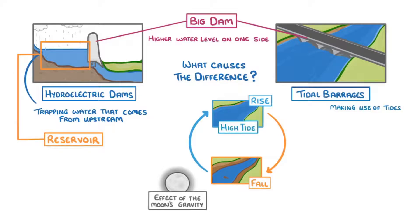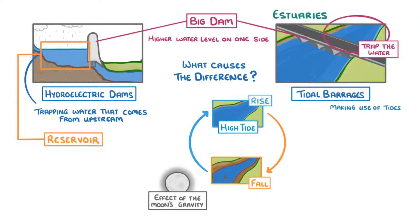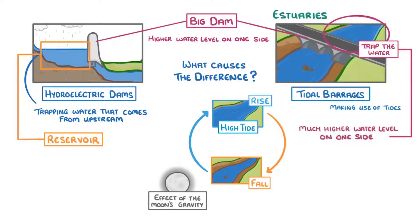Twice each day, we get a high tide, which is where the level of water in the ocean rises. This also happens in estuaries, which are the points where rivers meet the ocean. By placing tidal barrages, which are just big dams, in these estuaries, we can trap the water as the tide comes in, so that when the tide goes back out, we're left with a much higher water level on one side of the dam than the other.